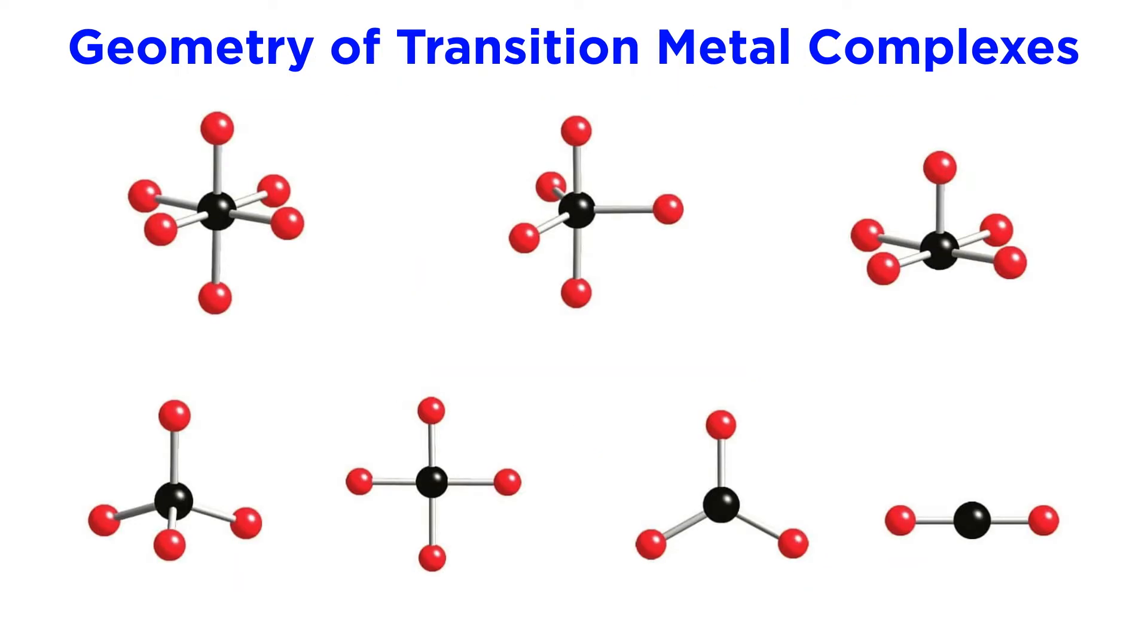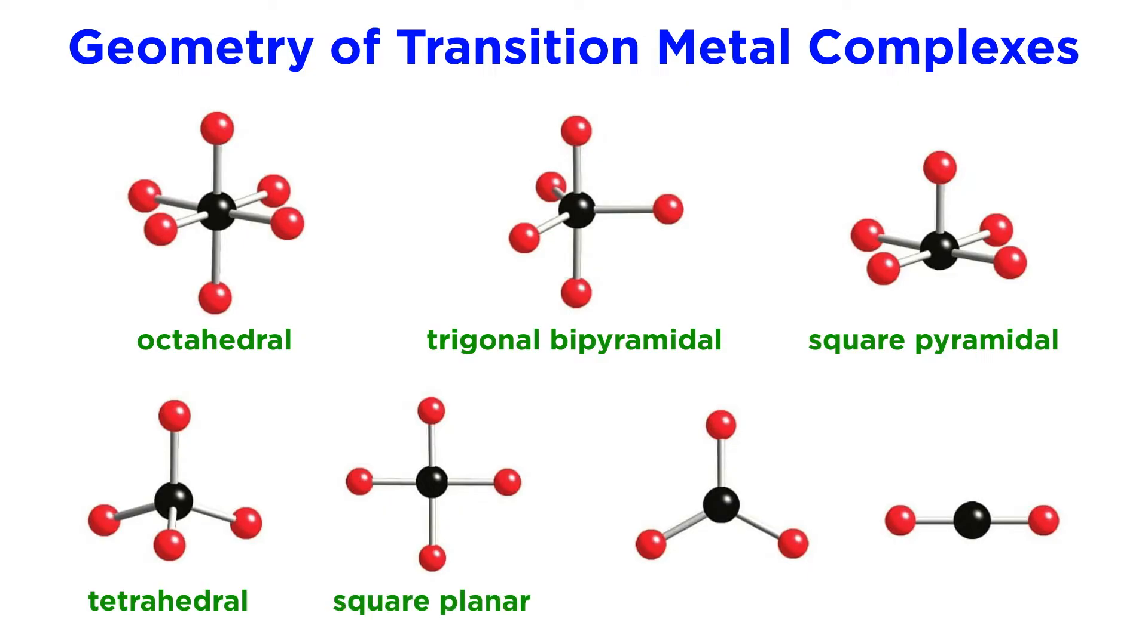The geometries of these complexes should already be very familiar from general chemistry. We just saw an example of an octahedral complex. Other geometries include trigonal bipyramidal, square pyramidal, tetrahedral, square planar, trigonal planar, linear, essentially all the ones we already know, just now with metals in the center.